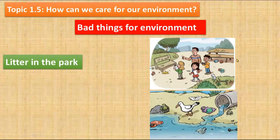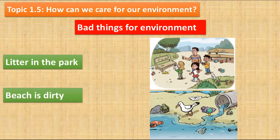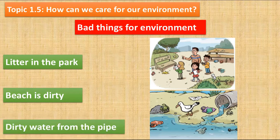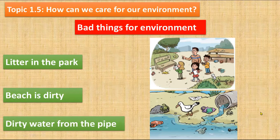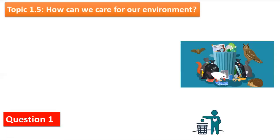Now look at the bad things people do for the environment. Look at this park — it is full of litter: packages, paper, cartons, and cans. This is a bad thing for the environment. Look at the beach — it is dirty. People did this, and dirty water comes from the pipe.